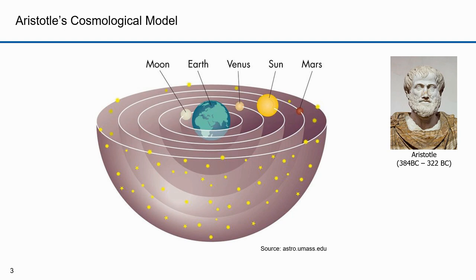Let's start with an ancient cosmological model that Aristotle developed. Aristotle was a Greek philosopher and a student of Plato, one of the most important founding figures in Western philosophy. He developed a theory that explained the motion of objects in the universe. Objects close to Earth had an innate desire to get to the center of the Earth, which was the center of the universe. Aristotle devised 55 celestial spheres that carried the planets and the points of light we refer to as stars. In this model, the Earth was fixed, and everything else moved around it.